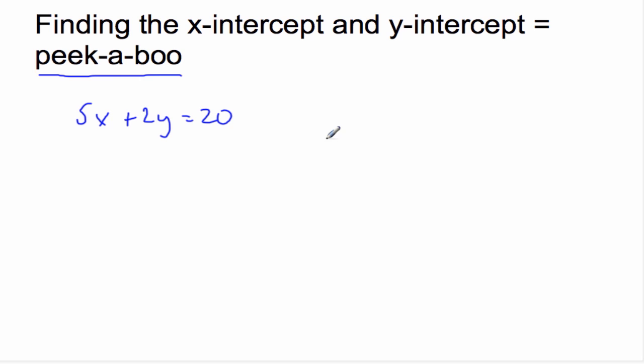If I want to find the x-intercept, I always make y equal 0, which in essence will take this value, make it 0. And so what I say is I do Peekaboo. So what I can do, I hide this here, Peekaboo, and I ignore it.